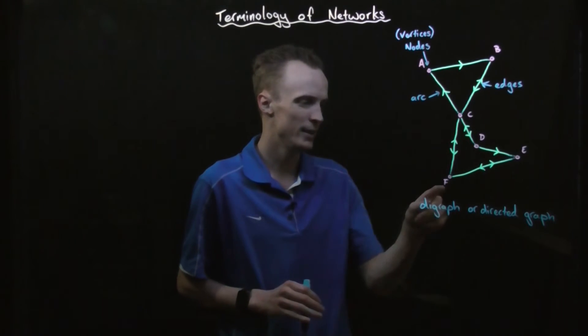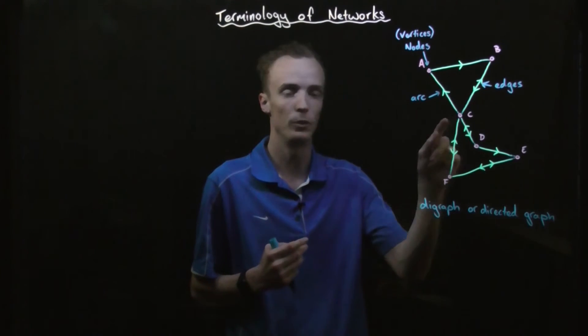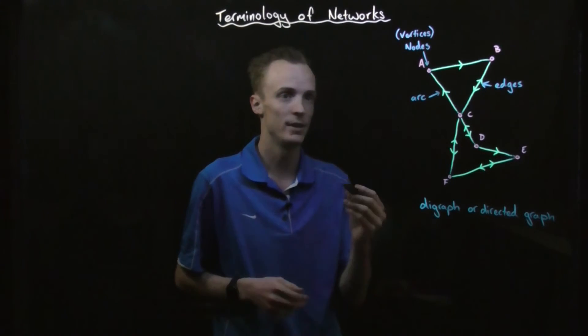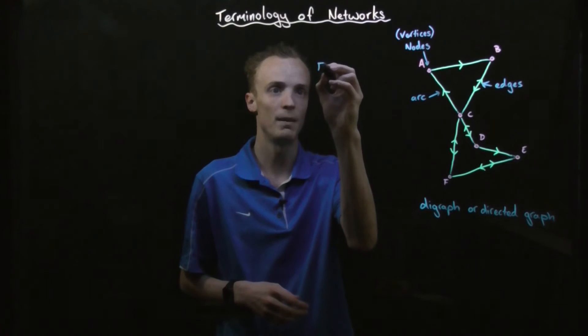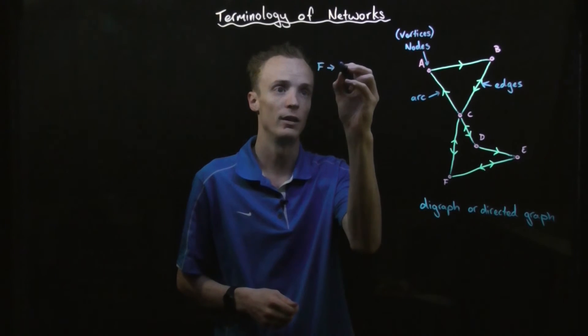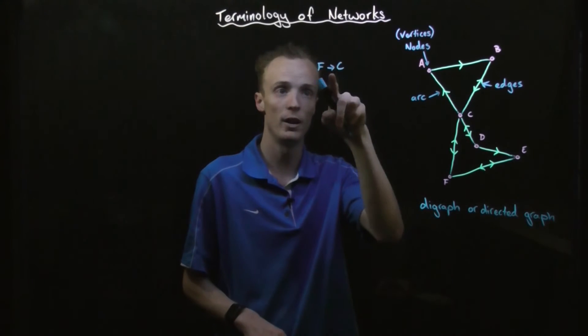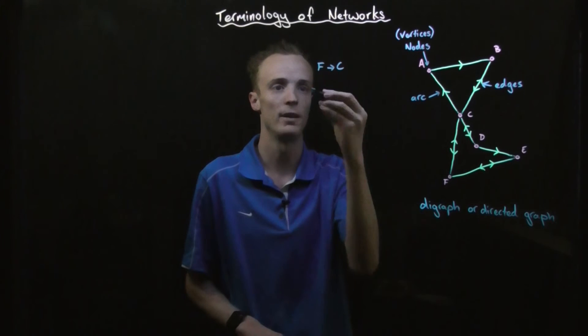For example, let's say I want to start in city F or node F and travel through to C. We can represent that as a one step journey between starting at F and going to C. Now it gets the terminology one step journey because it's only got one step in its journey.